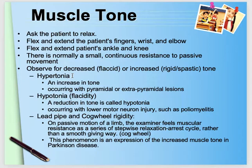Muscle tone is tested in the upper limbs at both the wrist and elbow joints. We rotate the wrist in a supination-pronation fashion, or we can move the elbow joint by holding the arm and forearm in both hands and moving the limb passively.